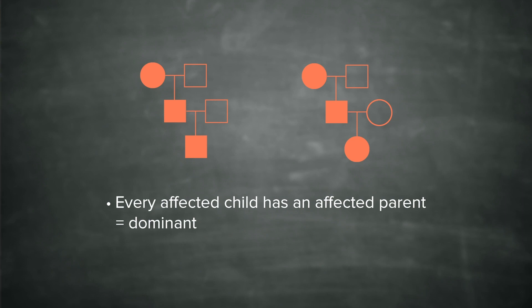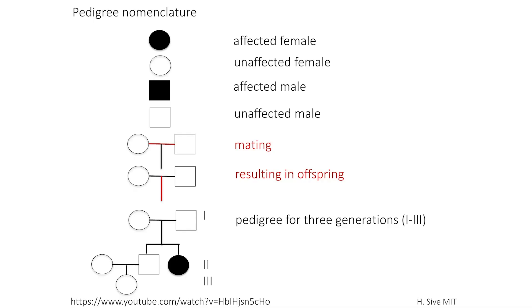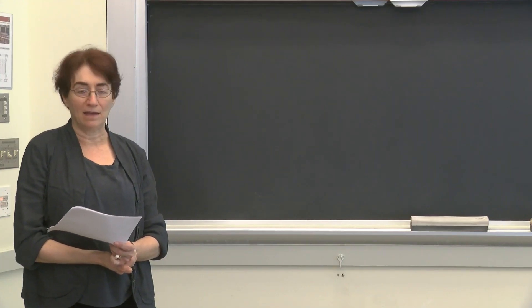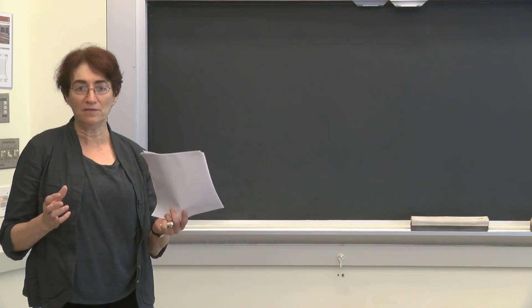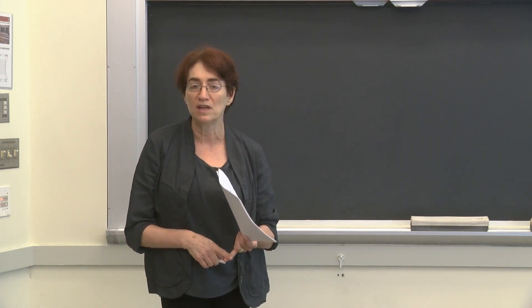Let's look at a couple of slides that show some nomenclature: affected females, unaffected females, and so on, with bars showing matings and offspring. Pedigrees for three generations are indicated by Roman numerals I, II, and III on the right-hand side of the pedigree so you can identify each generation. Before we look at more examples, we need to put together information about chromosomes — different types of chromosomes — and how different pedigrees can be interpreted based on these different types of chromosomes.